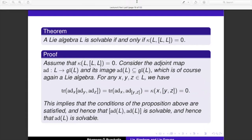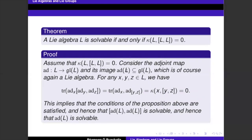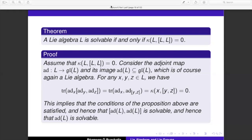That's Cartan's criterion for solvability — expressible in terms of the killing form, a very special bilinear form. In the next half of the lecture, we'll use the killing form again to produce a criterion for semi-simplicity, and that will also allow us to make statements about how semi-simple algebras decompose as direct sums of simples — something promised in previous lectures. Thank you for your attention.